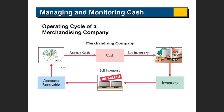The operating cycle: cash is received, used to buy inventory, the inventory becomes available for sale, which creates accounts receivable, which becomes cash once collected. This is the natural cycle for a merchandising company. You get cash, buy inventory, sell inventory, create accounts receivable, collect on that accounts receivable, and it continues. This is the cycle of cash coming in and going out.